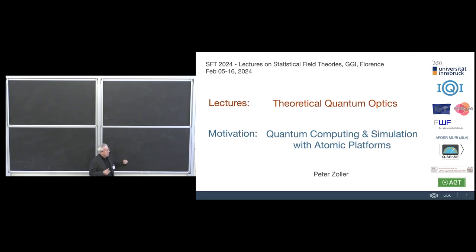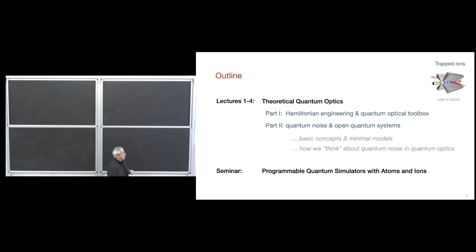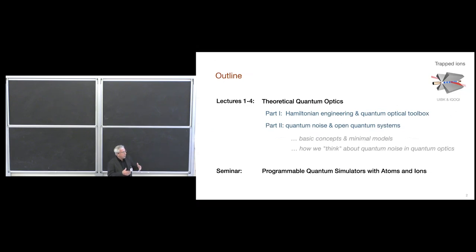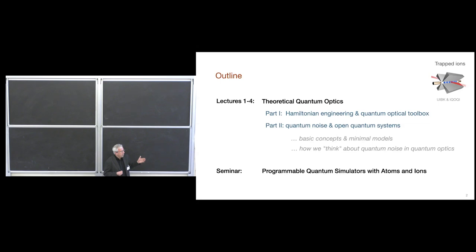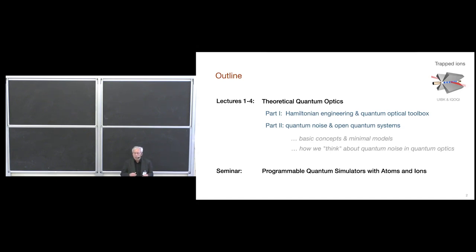My lectures here are motivated by quantum computing and quantum simulation with atomic platforms. I'll give you the underlying layer of theoretical quantum optics. We will have four lectures. The first part today will be elementary — the problem of Hamiltonian engineering and the quantum optical toolbox, using trapped ions as an example. The second lecture will be on quantum noise and open quantum systems, using minimal systems to illustrate how we describe quantum noise in quantum optics as it exists in the lab.